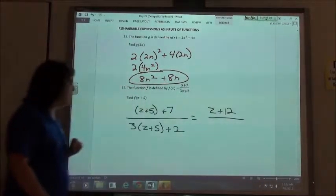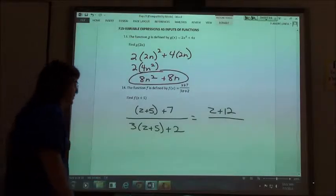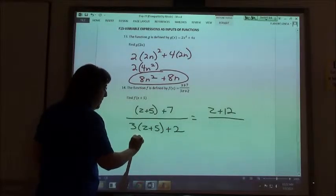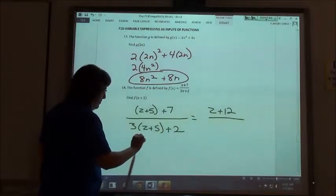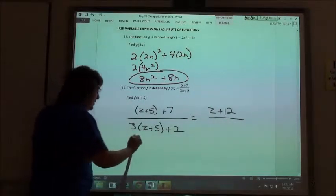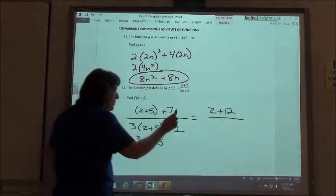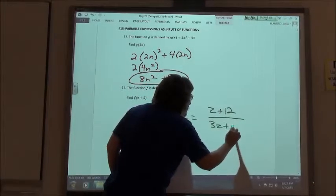So on the bottom of my fraction, using my distributive property first, I get 3z plus 15 plus 2, which is 3z plus 17.